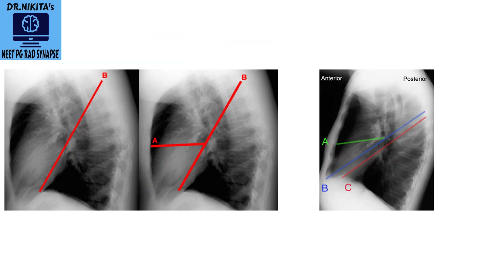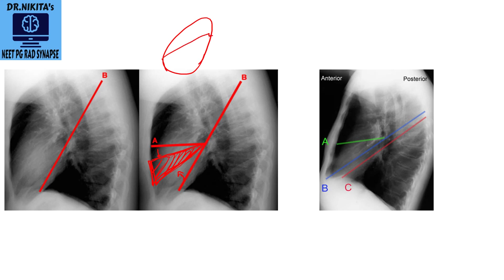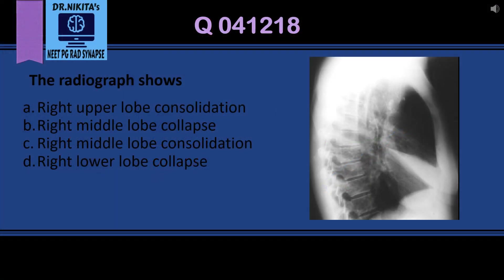In right middle lobe consolidation, the area will look white but the fissures remain in their position. In right middle lobe collapse, the middle lobe pulls the fissures towards it — the horizontal fissure comes down and the inferior part of the oblique fissure goes up — creating a triangular opacity overlying the heart. So a triangular white shadow overlying the cardiac shadow is the classical image of right middle lobe collapse.